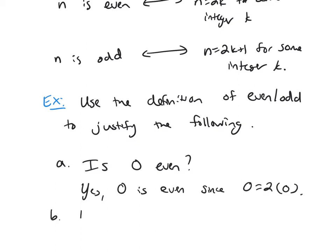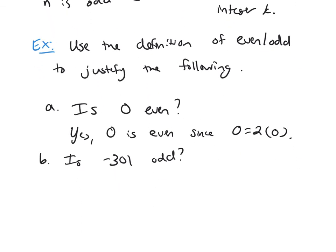Let me ask now, is negative 301 odd? You probably know that yes, that is odd. Yes, negative 301 is odd because it's 2 times something plus 1. Well, that needs to be negative 151.